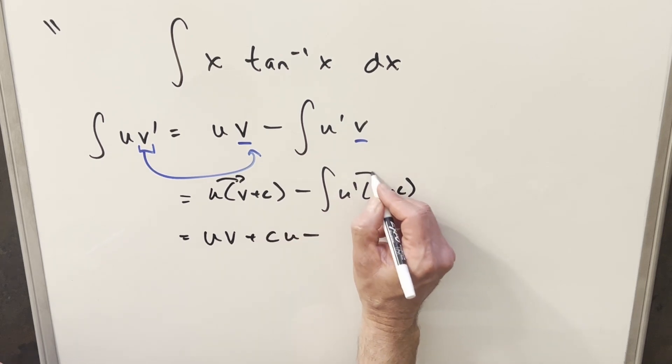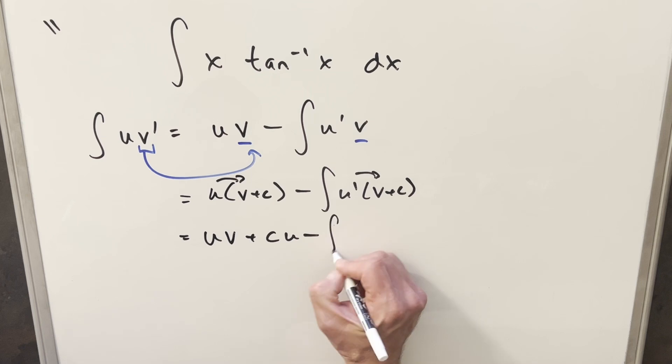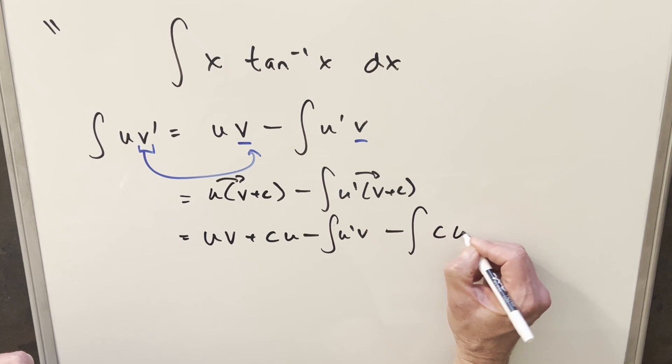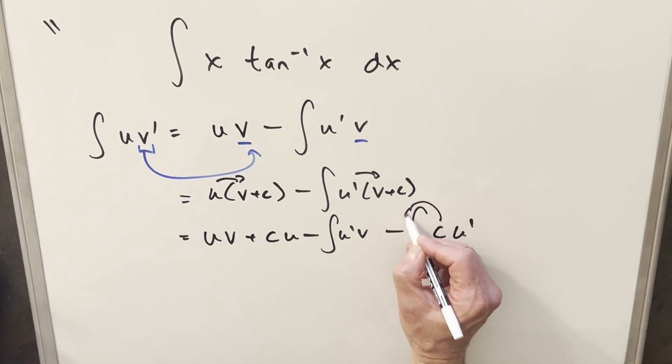And then we'll distribute again here and I can split this up into two integrals. I can write this as u prime v, and then for the second one I can write this as minus integral of, change the order, c u prime. But then for c u prime, like we could take the c outside of the integral, and then we're just integrating u prime, so we end up with c u here.